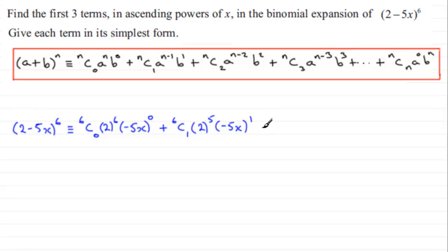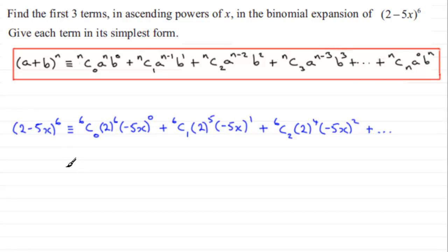The final term will be 6C2 times 2 to the power 4 times (minus 5x) to the power 2 — and 4 and 2 make 6 again. Don't forget with questions like this to put 'plus and so on' if you haven't reached the end, even though it asks for the first three terms. Now, (minus 5x) to the power 0 is 1, and 6C0 is just 1, so it's just 2 to the power 6, which is 64. For the next term, 6C1 — anytime you get nC1 it's always n — so this turns out to be 6.